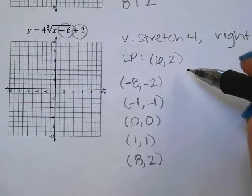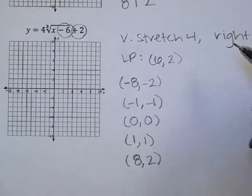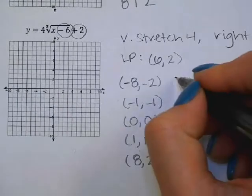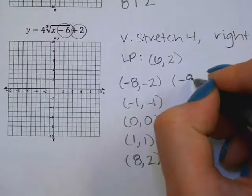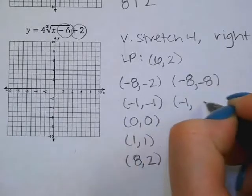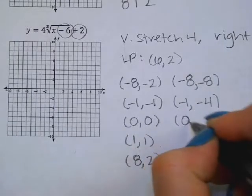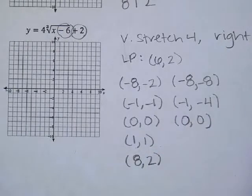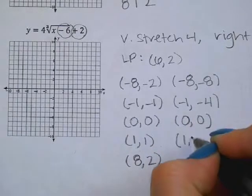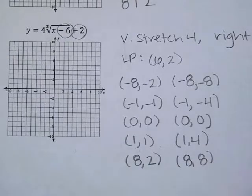So transformations, let's do them. What do I have first? Multiply what by 4? The Y. So I have negative 8, negative 8, negative 1, negative 4, 0, 0, 1, 4, 8, 8.